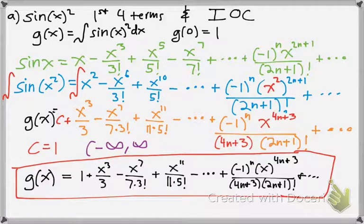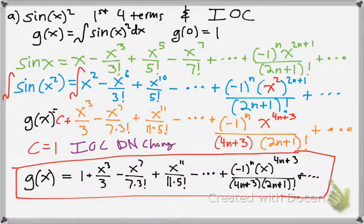The interval of convergence is negative infinity to positive infinity, so all real numbers. Because when you integrate, the interval of convergence doesn't change from the original function, which was sin(x). So the interval of convergence for sin(x) is negative infinity to positive infinity. It's kind of another thing you have to know.